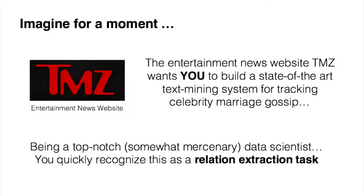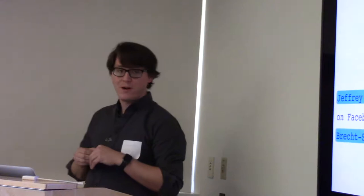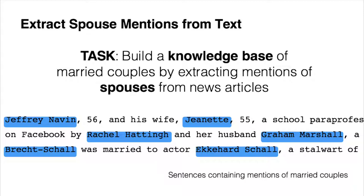So I'm going to set the stage and ask you guys to imagine that you were all well sought after data scientists and TMZ, the celebrity gossip website, has approached you to build a state of the art text mining system to extract celebrity marriage gossip. And you, not wanting to necessarily spin this up on Amazon Turk, you realize that this is a very nice use case of relation extraction. And you would like to use Snorkel to tackle this problem more quickly and collect your TMZ paycheck. So how would we do this? You would need to be able to build a knowledge base of married couples by extracting mentions of spouses or pairs of people from newswire text. These are just a few examples of real news article text that we've tagged people names in. And these would be potential sentences or potential pairs of entities that may or may not be married.